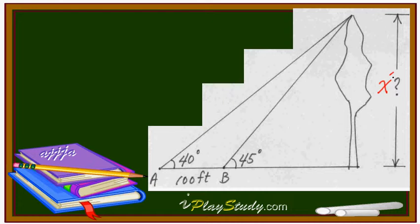This angle is 45 degrees and this one is 40 degrees. I'm going to label this base right here as B — small letter B. Then I can use this small triangle right here and make some kind of equation. This is the easiest approach for this 45-degree triangle.